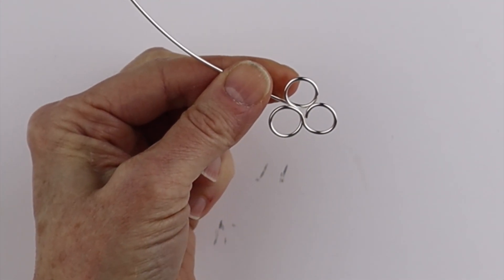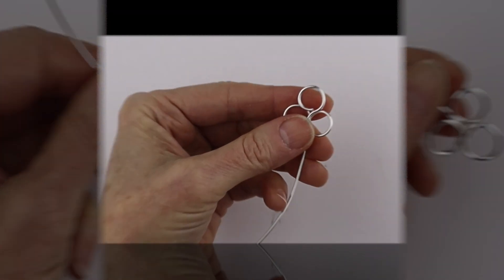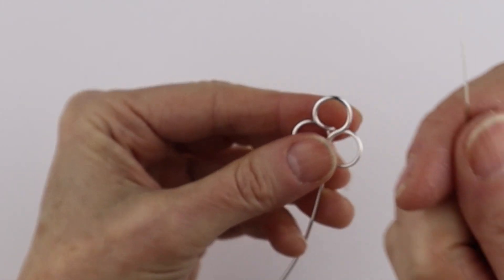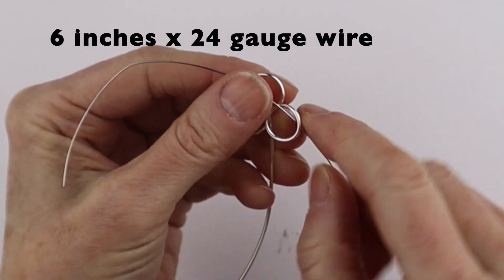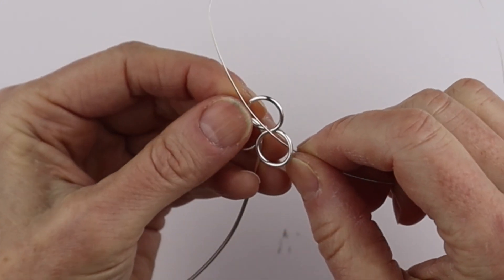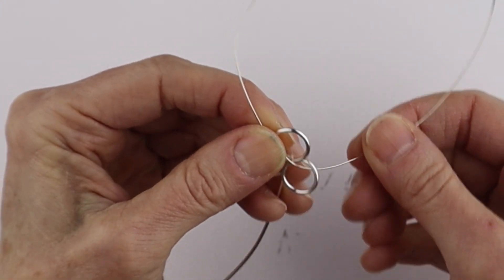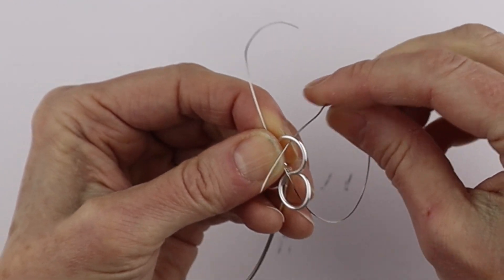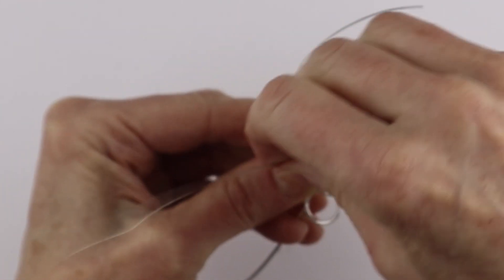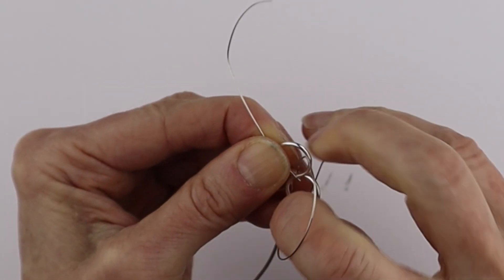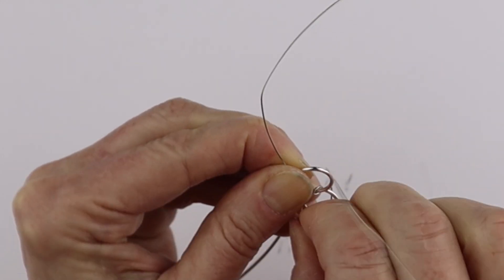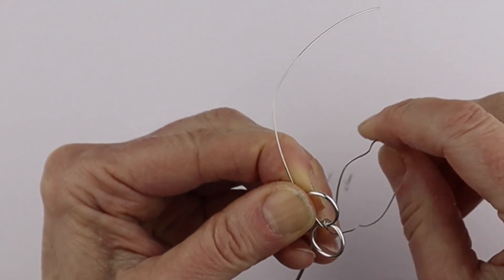So we have our three circles and now we want to add our beads. So I'm going to take the 24 gauge wire and I want to start just by looping it in between these two loops here. Just take this, bring it through just right around here. You can bring it through twice if you feel it's going to be more solid. We're just going to bring it through there.